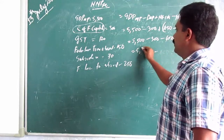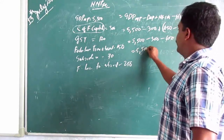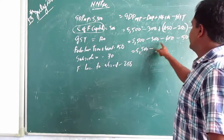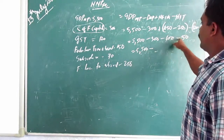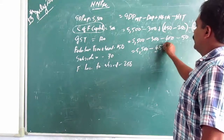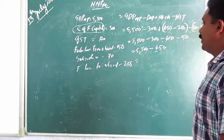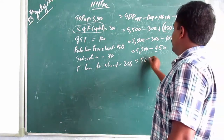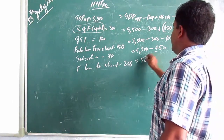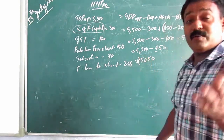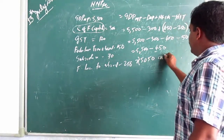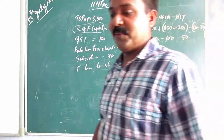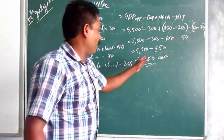5500 minus 450 gives the answer 5050. That is in rupees. The rupees symbol is very necessary — otherwise it will cause problems. The answer is rupees 5050 crores. You can write the rupees symbol or Rs. as per your wish. 5050 crores.